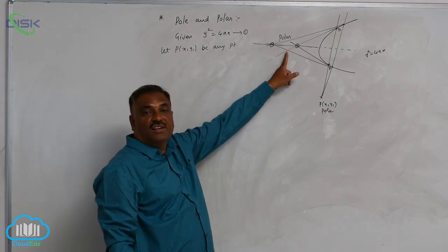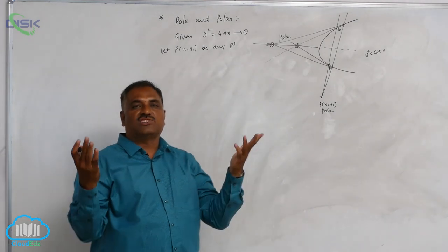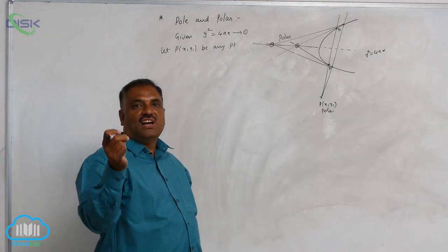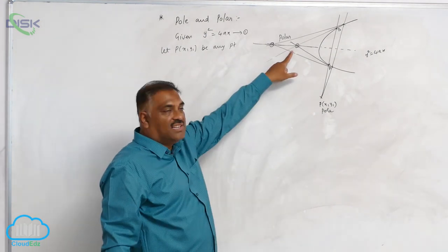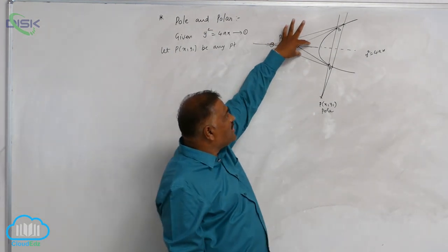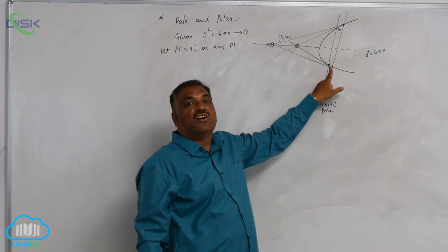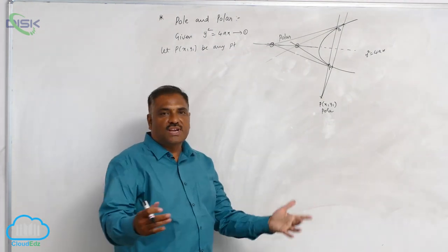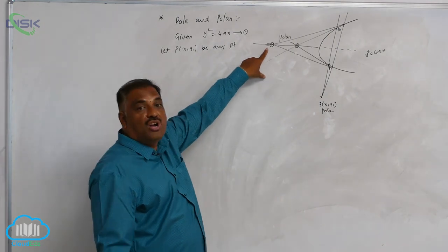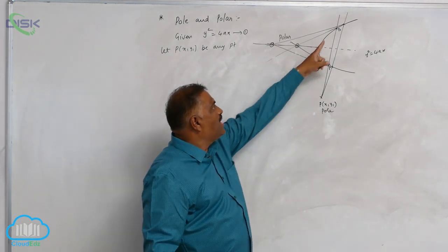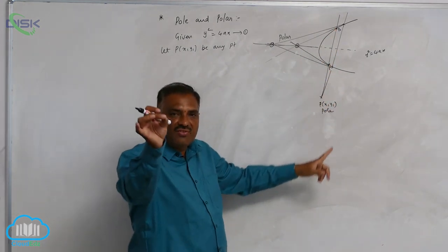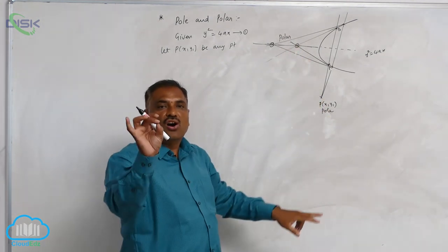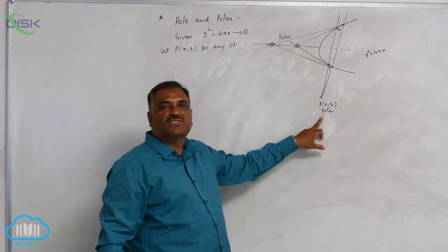The polar is a straight line. A straight line is a collection of points, and a collection of points is nothing but a locus. So the locus of these points — which are the points of intersection of tangents drawn at the extremities of the chords of a given parabola passing through a given point — is a straight line called the polar, and the fixed point is called the pole.